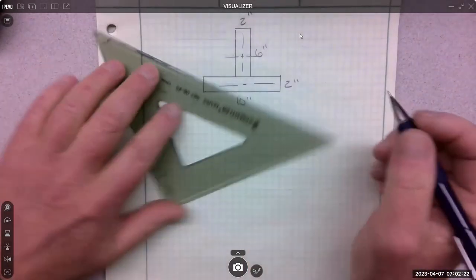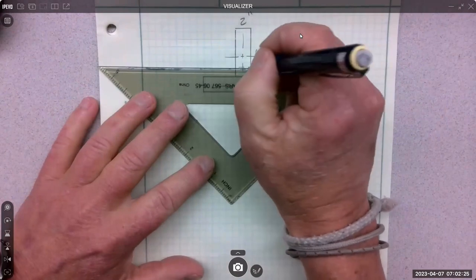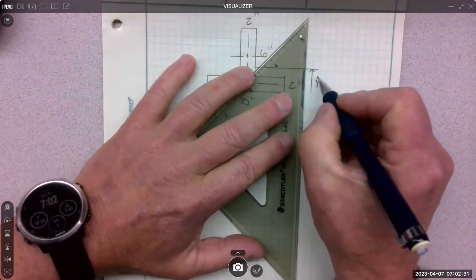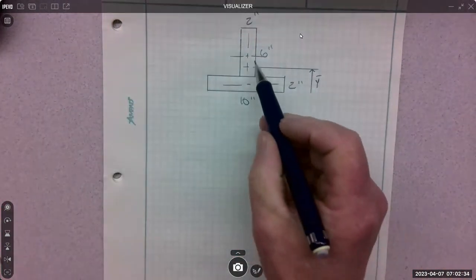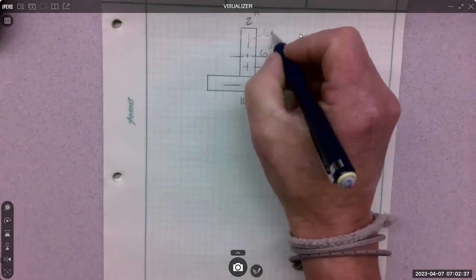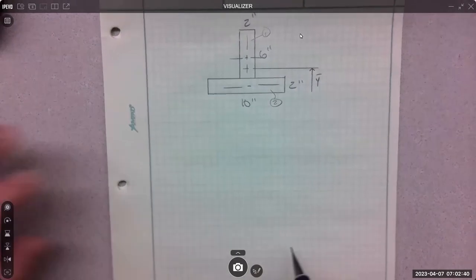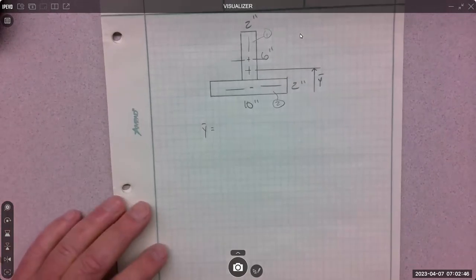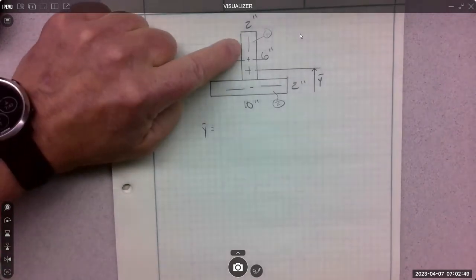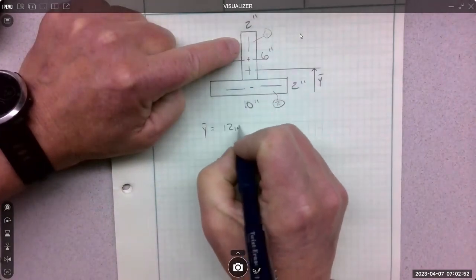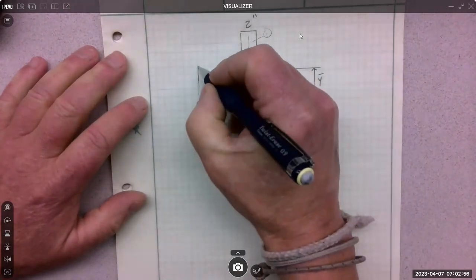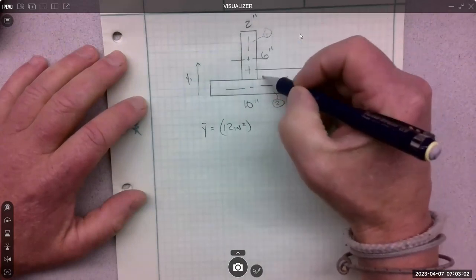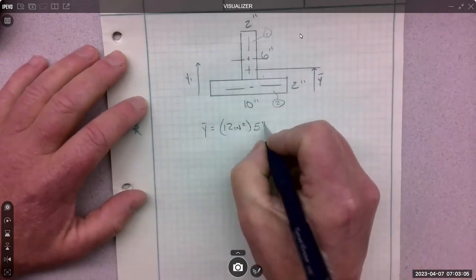So I'm going to assume the y-bar is going to be like in here somewhere. That's what we're looking for: y-bar, the composite centroid. Here's the individual centroid. I'll call this shape one and this shape two. And I'm just going to write the equation, y-bar equals, and then since we have simple numbers we can just do it in our head. So shape one, six times two is 12 inches squared, and then the distance of y one would be two plus this three, so five inches.